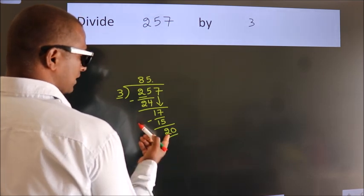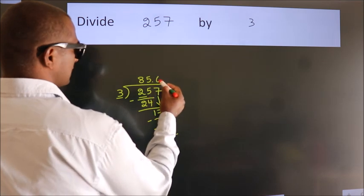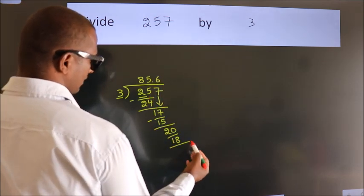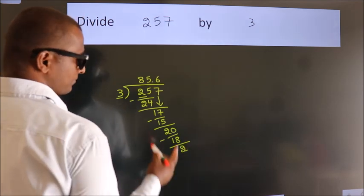So, 20. A number close to 20 in the 3 table is 3 sixes, 18. Now, we subtract. We get 2.